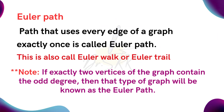First, let's look at the definition of Euler path. A path that uses every edge of a graph exactly once is called an Euler path. This is also called Euler walk or Euler trail. An important note: if exactly two vertices of the graph contain an odd degree, then the type of graph will be known as Euler path.